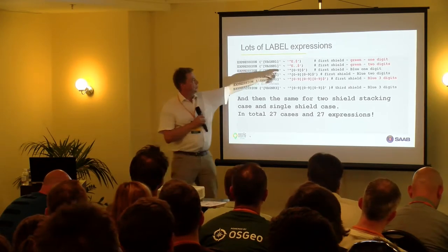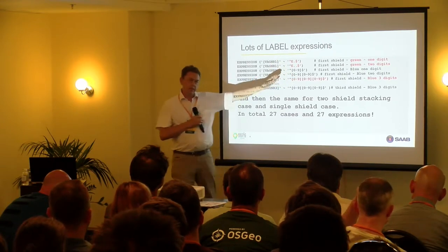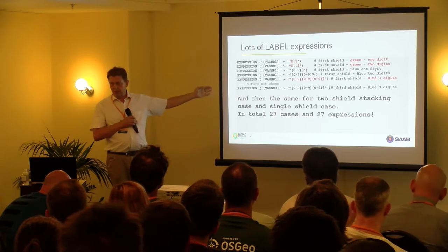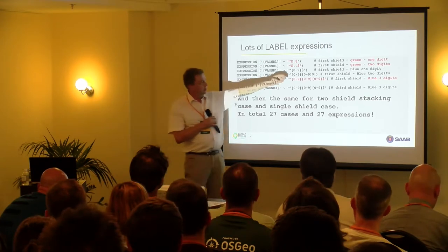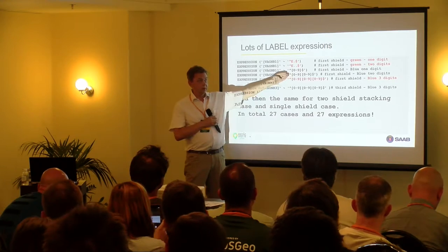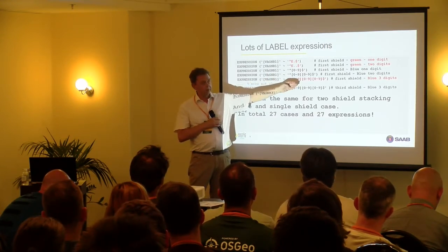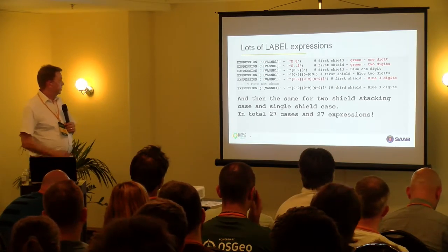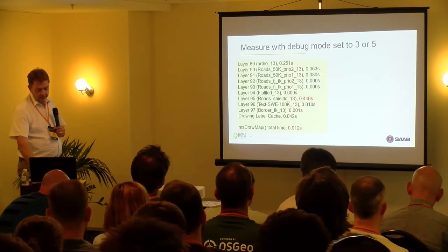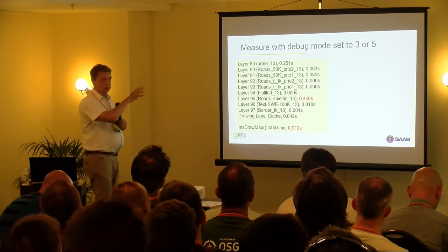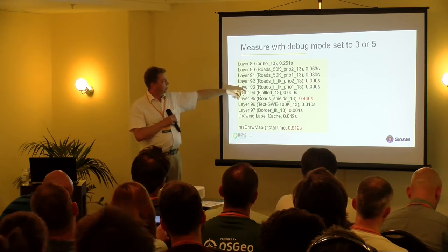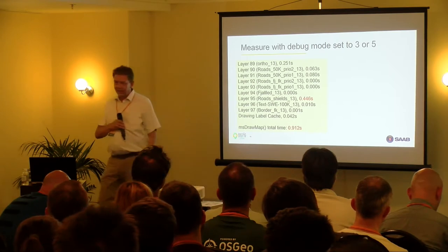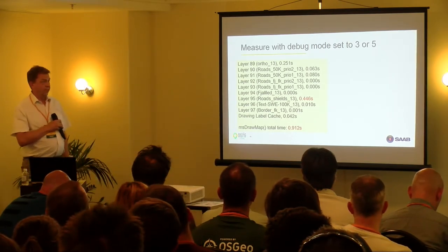You have cases for two characters and more. Most European road shields are green for European main roads and blue or other colors for secondary roads. In Sweden, secondary roads are blue but can still be main roads, numbered up to 500 — but they should not be displayed if above 500. So we end up with a lot of expressions. The roads and road shields take almost half a second — out of a total of 900 milliseconds — which is a little too much. You get this kind of information by running MapServer with debug mode, usually level three or five.